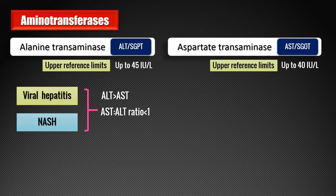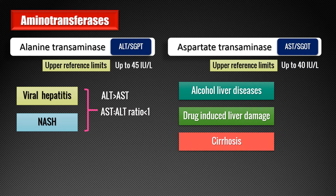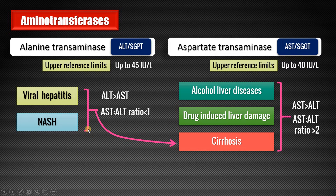In some disorders, the elevation of AST is more than ALT — such as alcoholic liver disease, drug-induced liver damage, and cirrhosis of the liver. In these conditions, the ratio of AST to ALT is always more than 2. When viral hepatitis or NASH advance and lead to cirrhosis, this ratio will increase to more than 1.